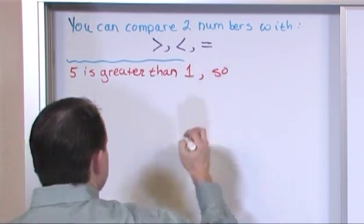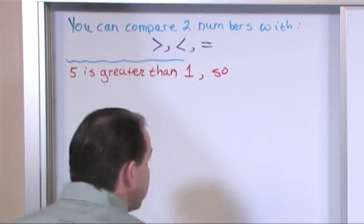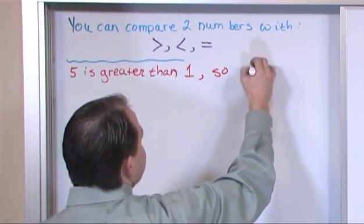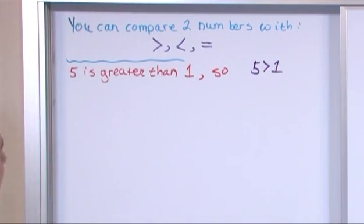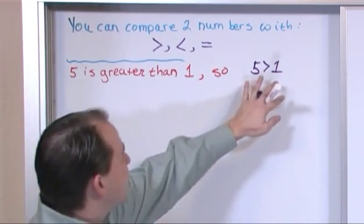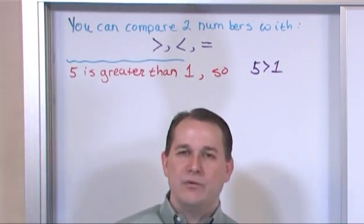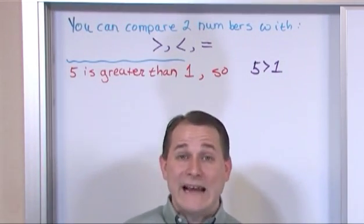So, drum roll, we say the number five is greater than one. That's how you write it, five is greater than one. So this is expressing something that you already know. I mean, you know that five is greater than one. You can say it in a sentence.